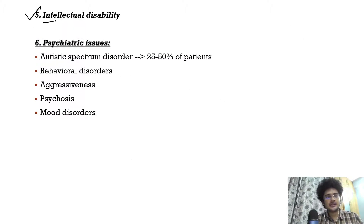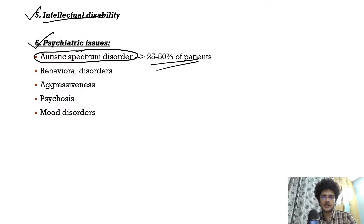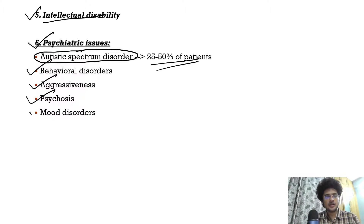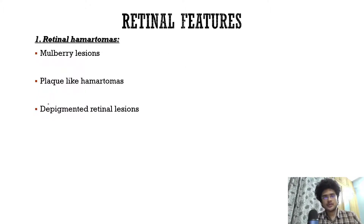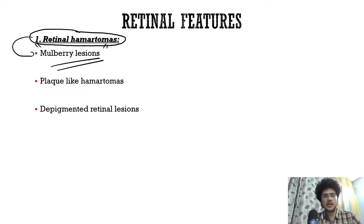Intellectual disability is common. Psychiatric issues are also frequent — 25 to 50% of tuberous sclerosis patients will have autistic spectrum disorder, which is the key MCQ point. Other issues include behavioral disorders, aggressiveness, psychosis, and mood disorders. Retinal hamartomas are usually asymptomatic and are classically described as mulberry lesions.